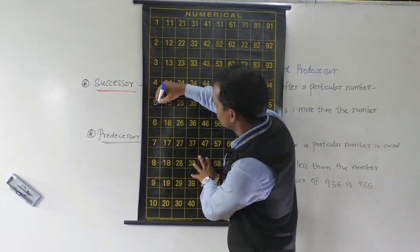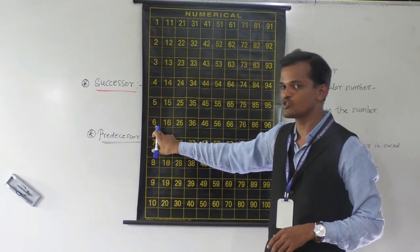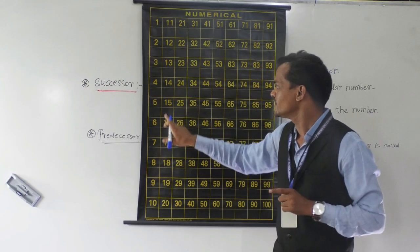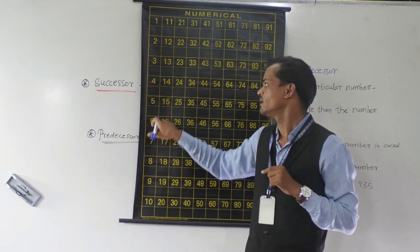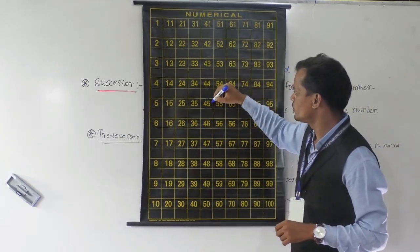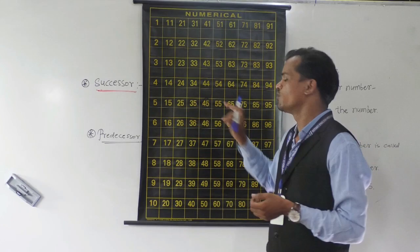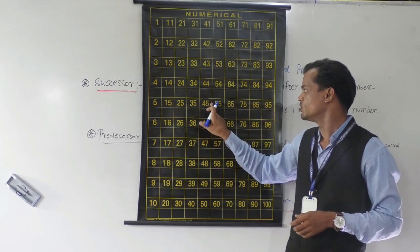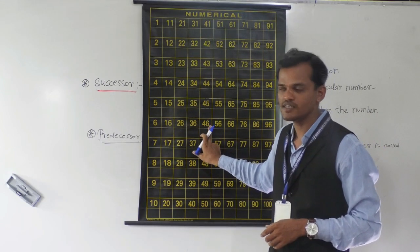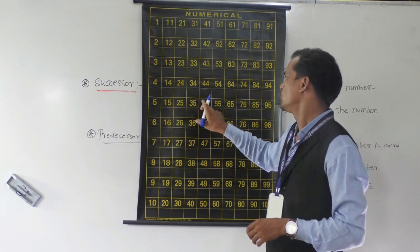Suppose we have the number 5 here, and after 5 comes 6 — so 6 is the successor of 5, and this 6 is 1 more than 5. Then suppose 45 is the given number and they ask about the successor of 45 — so after 45, which number comes just after? That is 46, so 46 is the successor of 45.